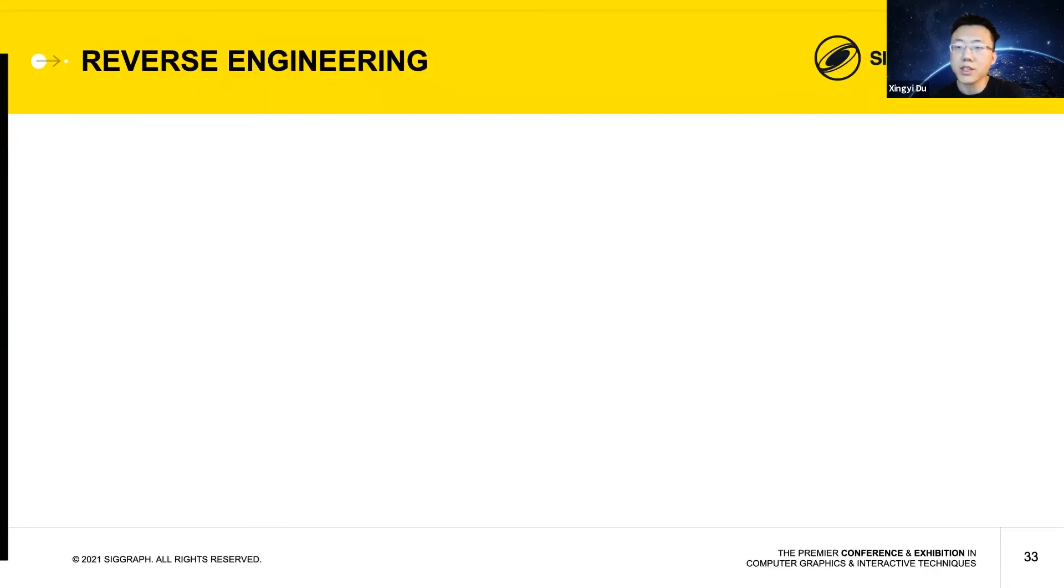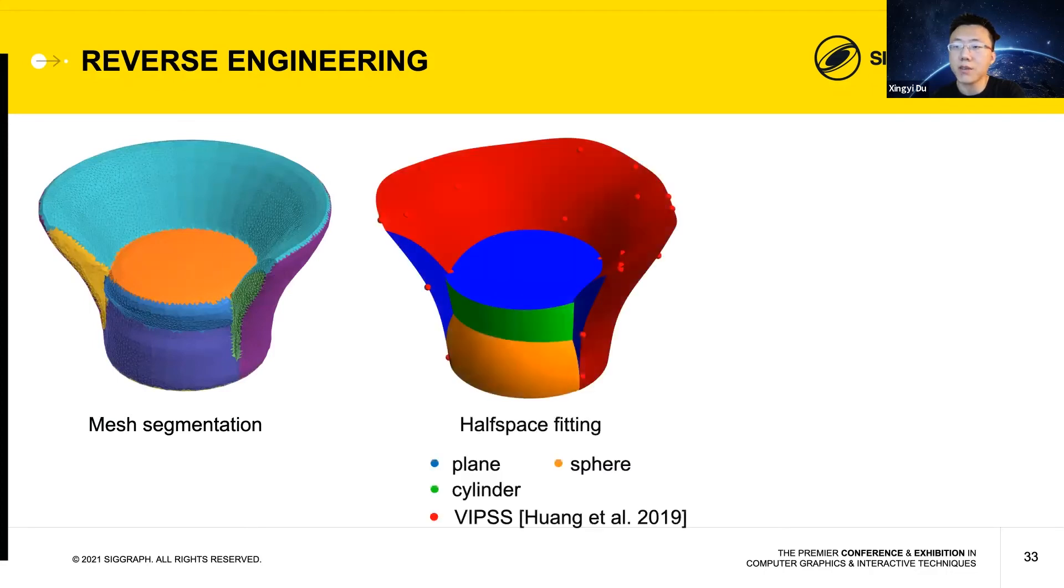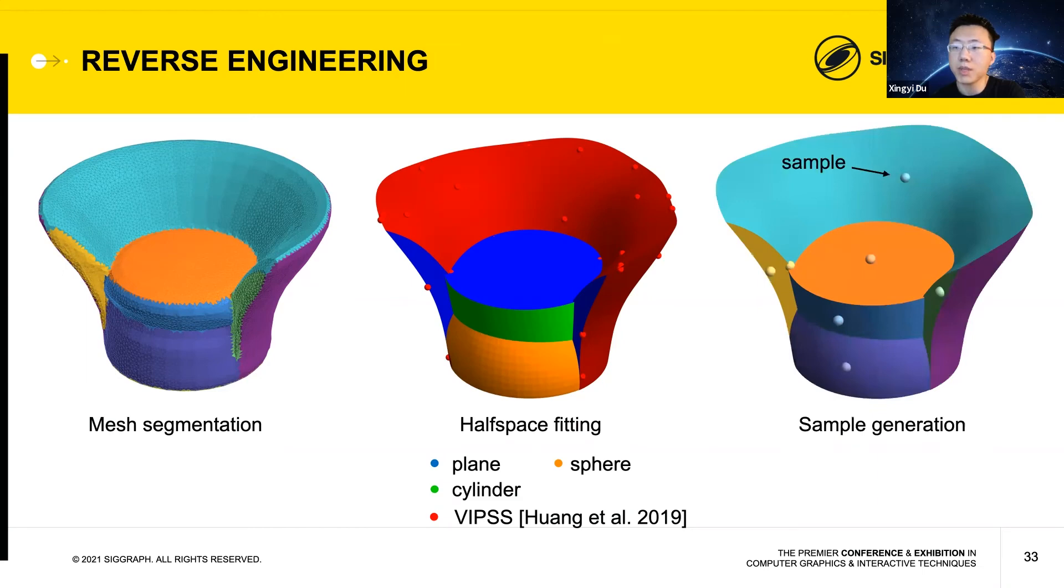Another key benefit of BSH is that it's rather straightforward to convert from another shape representation, such as meshes. The two ingredients of BSH, namely the half spaces and samples, can be obtained from an input mesh either using existing algorithms or simple heuristics. To obtain the half spaces, we first employ an existing mesh segmentation algorithm to divide the mesh into smooth segments, and then fit each segment with some half spaces that's easy to edit, such as a primitive or a free-form surface, such as a variational implicit point set surface, or VIPSS in short. The red dots are used by VIPSS to control the shape of the surface. Finally, a sparse set of samples can be obtained by applying a simple heuristic that iteratively adds new samples until the original shape is reproduced. Please see the details in the paper.